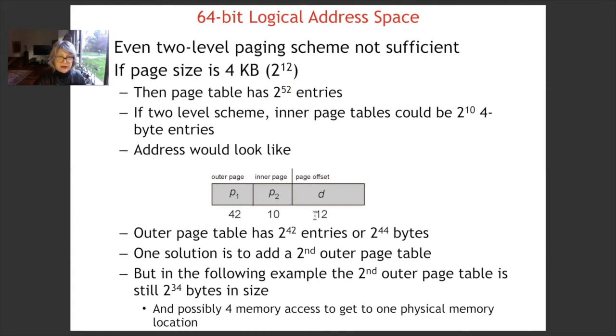Here, we assume that d is 12 bits, p2 is 10 bits, and then the remaining bits are used for p1, which is 42 bits. So, outer page table has 2 to the power 42 entries or 2 to the power 44 bytes. Here, we are assuming that each entry is 4 bytes.